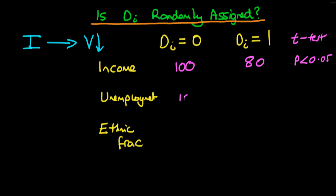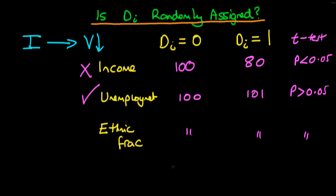We might look at unemployment and find that the level of unemployment is 100 on average in those states which didn't receive infrastructure spending, and 101 in those that did. In that case, it's probably the case that p is greater than 0.05, especially if we're not dealing in a particularly large sample size. On the basis of just looking at unemployment, we might conclude that the variables were randomly assigned. But the trouble is, since we've already concluded from income that they probably weren't randomly assigned, and if we think income is an important determinant of violence, then comparing the mean level of violence between the two regions might not be a good thing to do. We can continue this for all variables of interest and compare to see if there is any difference between the control and treated regions.